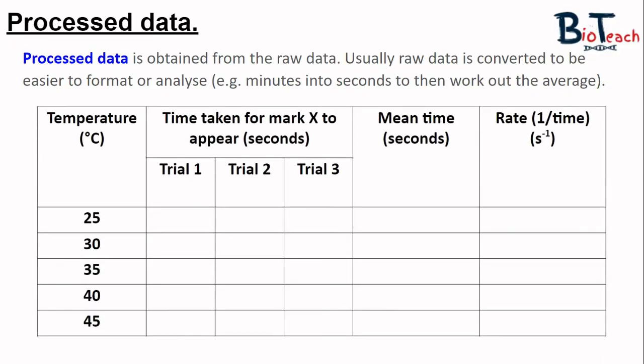So if I was to draw a processed data table, this is roughly what it would look like. You can see the temperature column is in the same place on the left-hand side, but now we have some changes. The next three columns are for the time taken for the X to appear in seconds only and for the three trials separately, and then there is a mean time column. There is also a rate column at the end which is looking at the one over time.